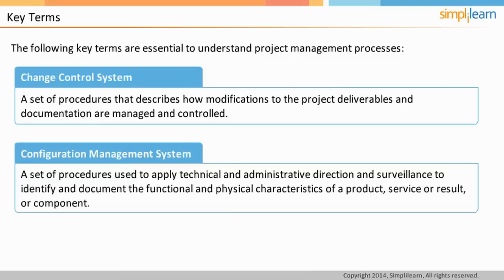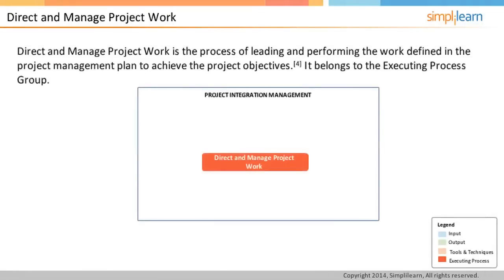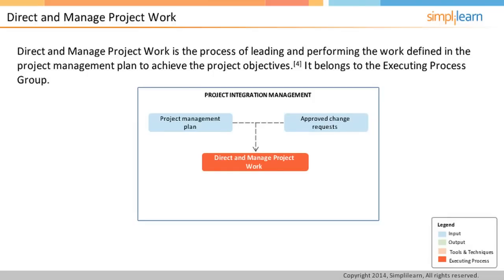Let us look at the next process of the project integration management knowledge area, which is direct and manage project work. Direct and manage project work is the process of performing the work defined in the project management plan to achieve the project objective. This process marks the performance and completion of activities in a project. The input to this process is obviously the project management plan, since the project is executed as per it. The other inputs are any approved change requests that need to be implemented, as well as enterprise environmental factors and organizational process assets.